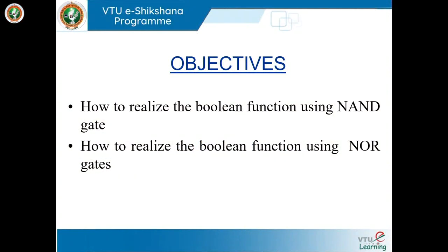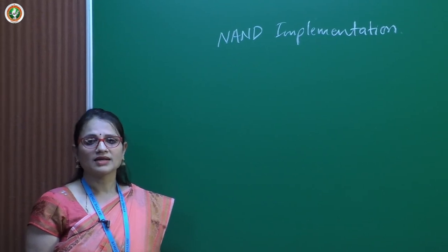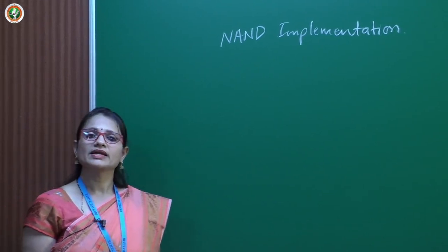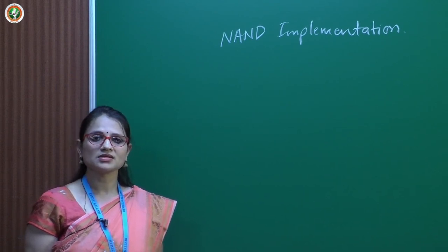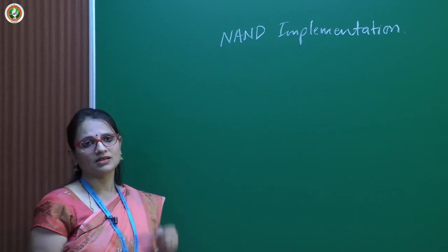Today we are going to see two different circuit implementations using NAND gate and NOR gate. These NAND and NOR gates are called universal gates. We are going to discuss why they are called universal gates and their purpose — any circuit can be designed using only NAND or NOR gates.